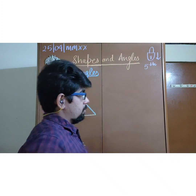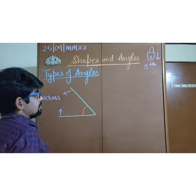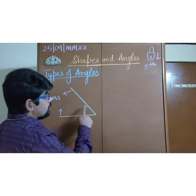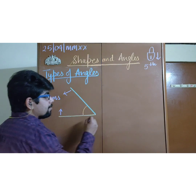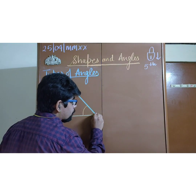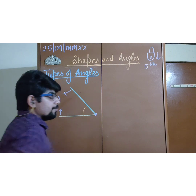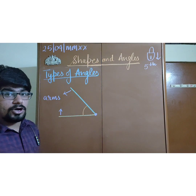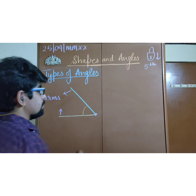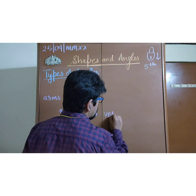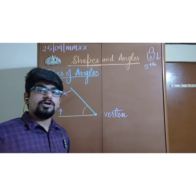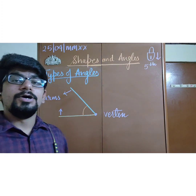Now let us see the next part. Where the two lines are meeting, that point is called the vertex.